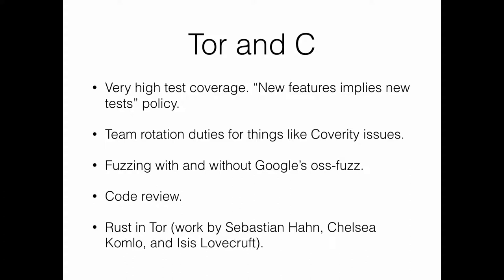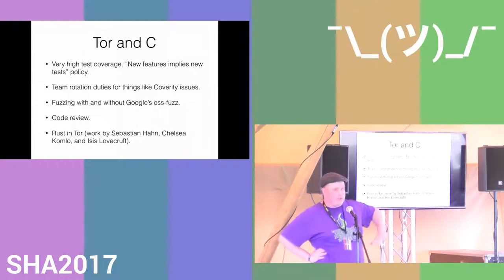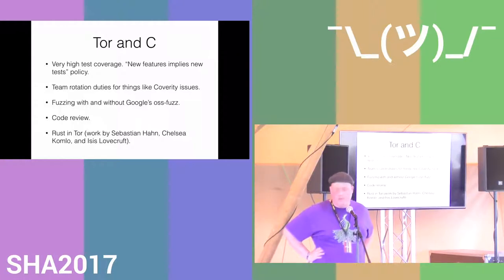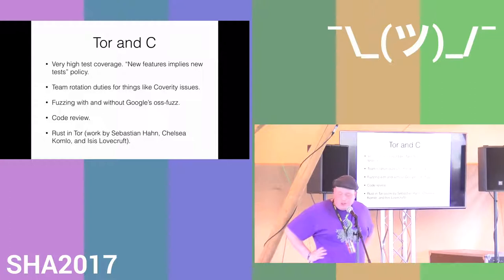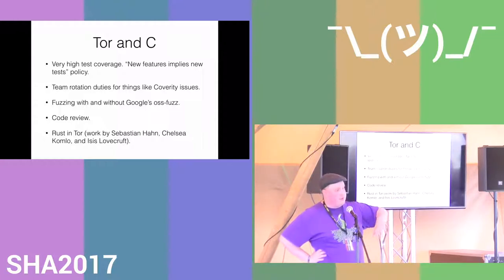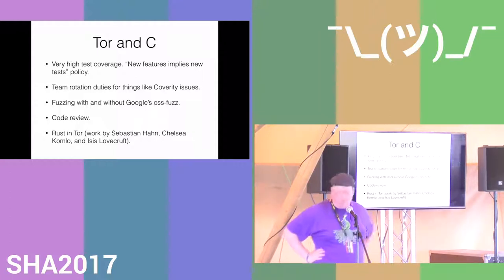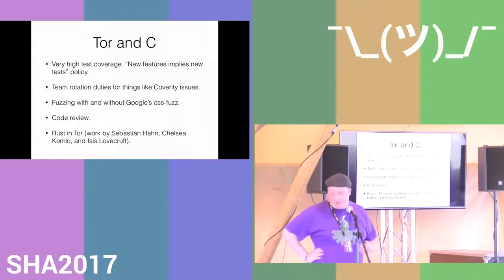Tor and C works pretty well. I also work on C Tor for a living — the Erlang thing in my spare time and the C thing at work. We have very high test coverage, which helps detect things early. We have active team rotations in the core team, handling new bugs, user support, and Coverity issues from static code analyzers. We recently joined OSS Fuzz — Google's fuzzing infrastructure where you submit programs that run on a big cluster doing fuzzing with AFL and libFuzzer. All code that goes in has to be reviewed, and Nick Mathewson reads every line that enters tor.git.